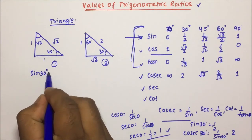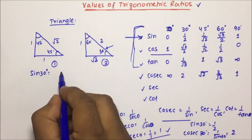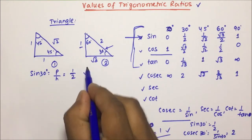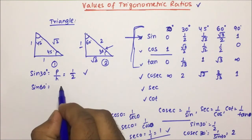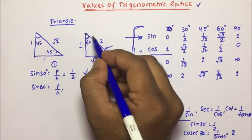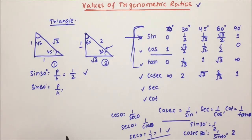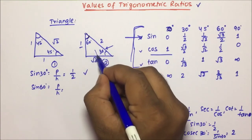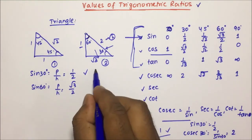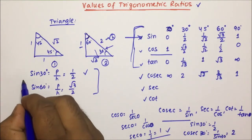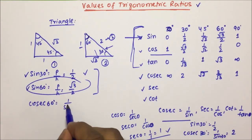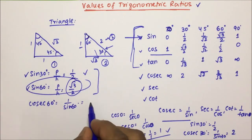So sin 30 — 30 degree is here, and sin theta is perpendicular divided by hypotenuse. So the perpendicular is 1 and hypotenuse is 2, so sin 30 = 1/2. For sin 60, since 60 is here, the perpendicular in front of it is √3 and hypotenuse is 2, so sin 60 = √3/2. Once you get sin 60 and want to calculate cosec 60, it will be 1/sin 60 = 2/√3.